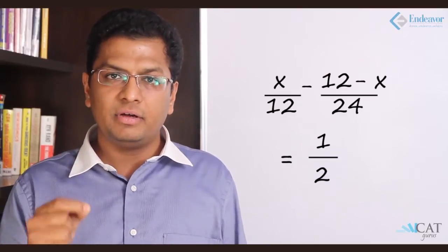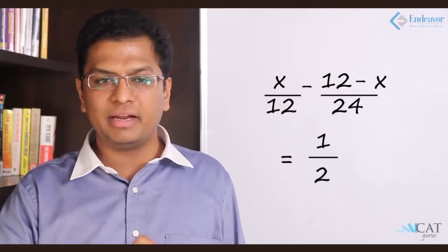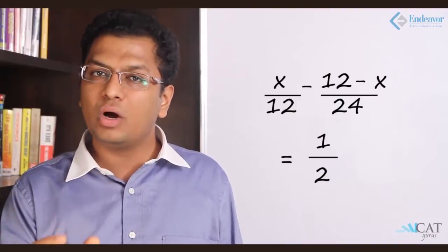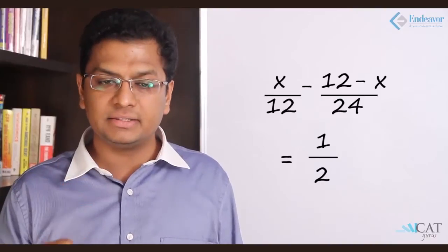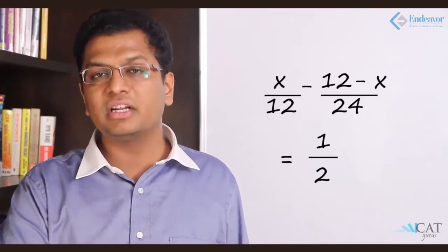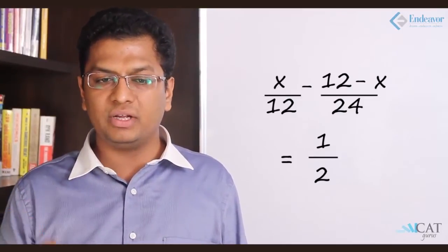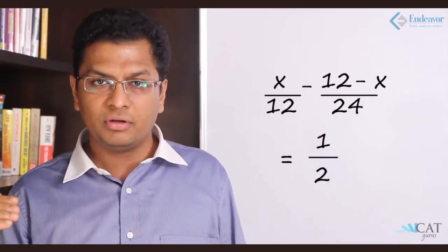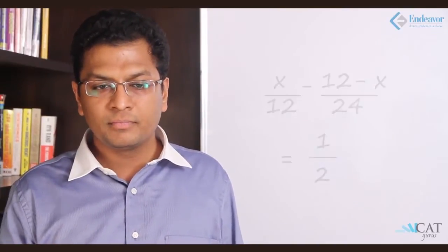So x upon 12 and 12 minus x upon 24, that is the work done by both of them. Now it takes 2 hours for the tank to overflow, meaning 2 hours is the work required to completely fill the tank from emptiness. So x by 12 minus 12 minus x upon 24 equals half, because it takes 2 hours, so in 1 hour it will be 1 by 2.